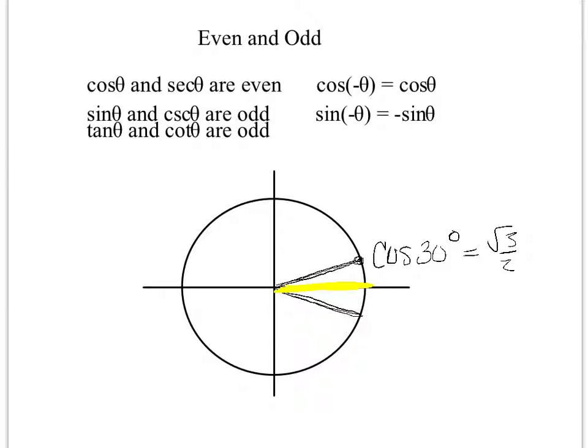They're both right here on the x-axis. So it's still going to be root 3 over 2. Cosine of negative 30 degrees is still positive root 3 over 2.